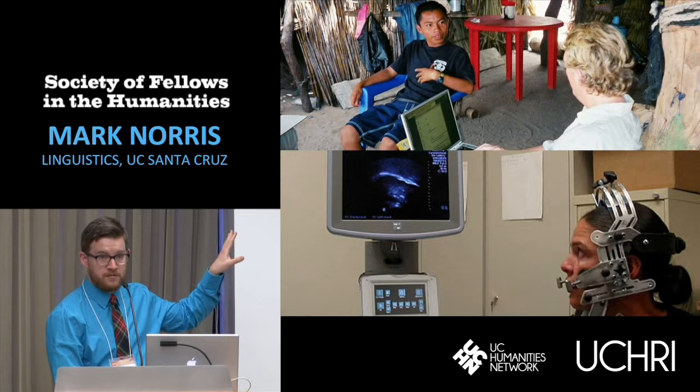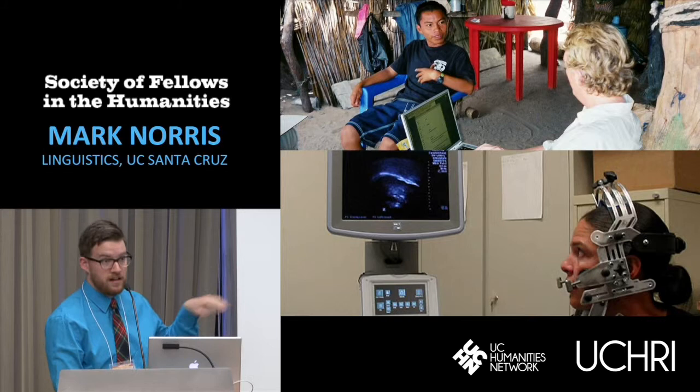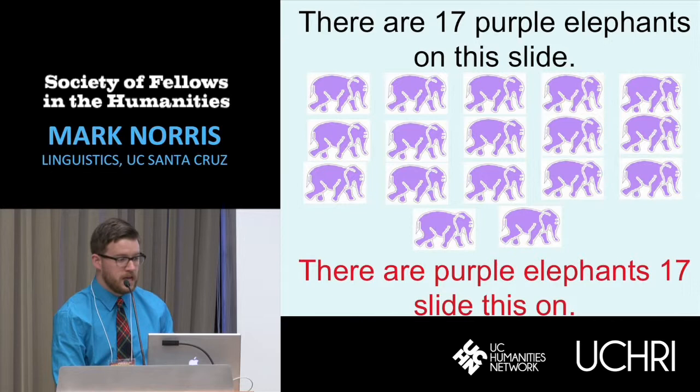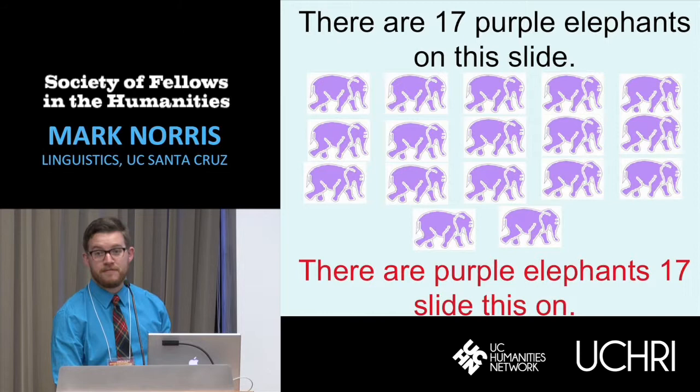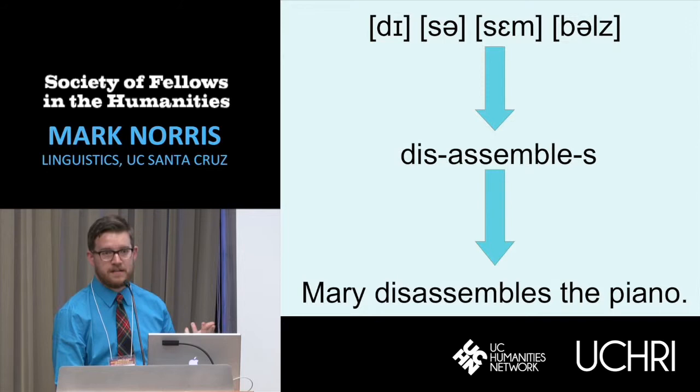Methodologically, theoretical linguistics has methodologies that span all the way from having one-on-one conversations with speakers of other languages to doing lab-based experimental studies of speech physiology and processing, but we're all interested in the question of what it means when you know a language. So why is it that you can look at the sentence 'there are 17 purple elephants on this slide' and identify that as a sentence of English, whereas 'there are purple elephants, 17 slide this on' is very clearly not English?